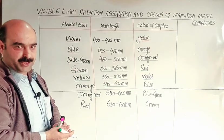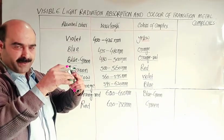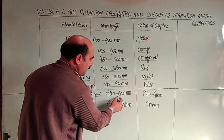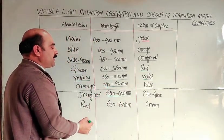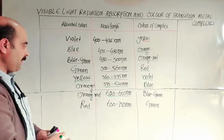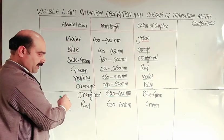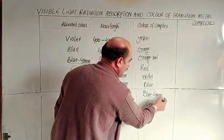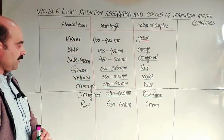If visible radiation falls on a coordination complex and it absorbs the lower wavelength radiation, 620 to 650, showing orange-red absorption, then the compound or complex will appear blue-green.